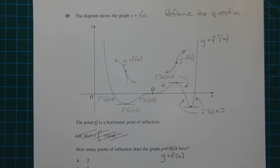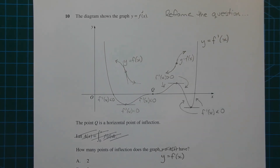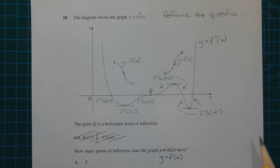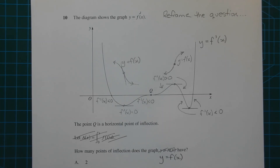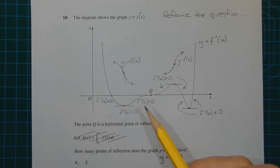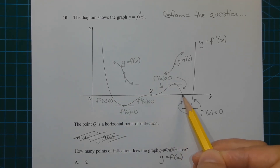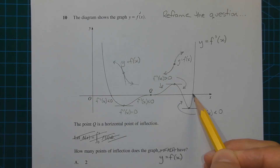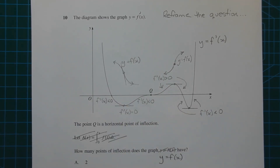Going back to the graph of y equals f dash of x, the y values represent the gradient of the tangent at the corresponding x values on the graph y equals f of x. There are four x-intercepts on this graph, and they represent stationary points on the curve y equals f of x.